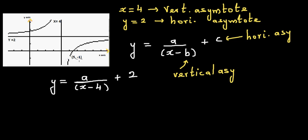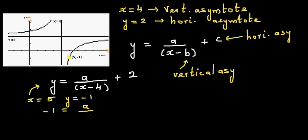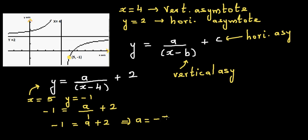We know from the graph that when x = 5, y = −1. Plugging this in: −1 = a / (5 − 4) + 2, which gives −1 = a / 1 + 2, so −1 = a + 2. Taking 2 away from both sides, a = −3.